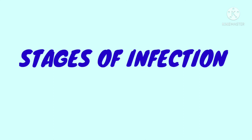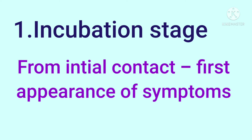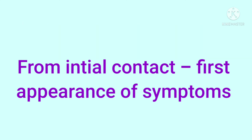The next topic is stages of infection. When pathogens enter a person, we can divide the infection into stages. There are 4 stages. The first is the Incubation period — pathogens are in the body, developing and multiplying, from initial contact until the first symptoms appear.